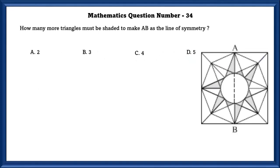Mathematics question number 34. How many more triangles must be shaded to make AB as a line of symmetry? Checking out the line, we can see that 1 must be shaded in order for this figure to be symmetrical. 2 also has to be shaded. 3 also. 4 also. So the more triangles that need to be shaded are 4.